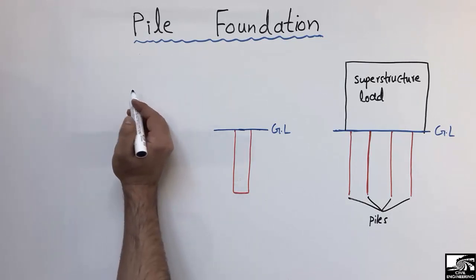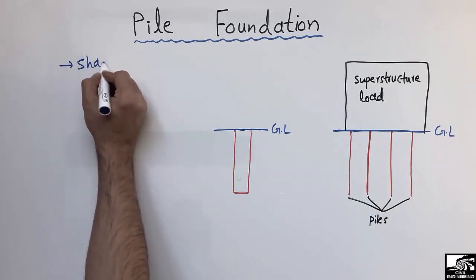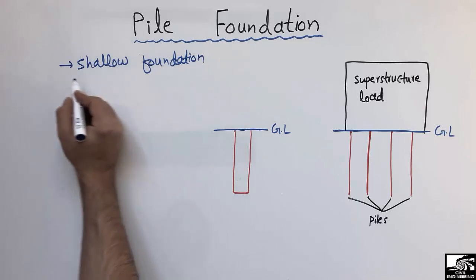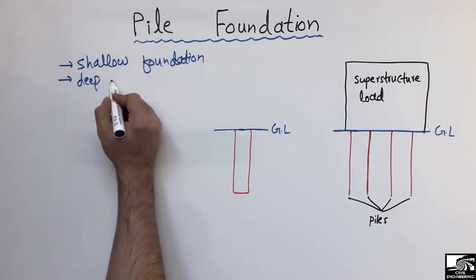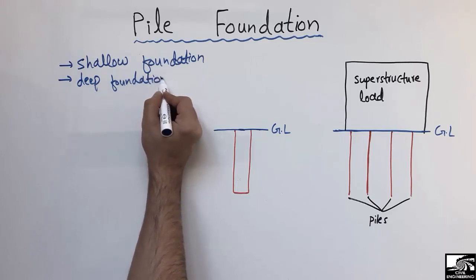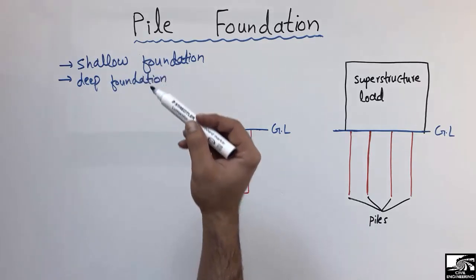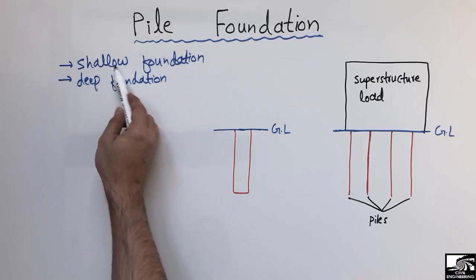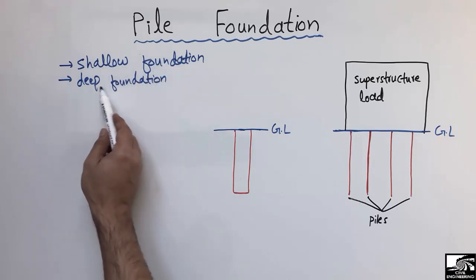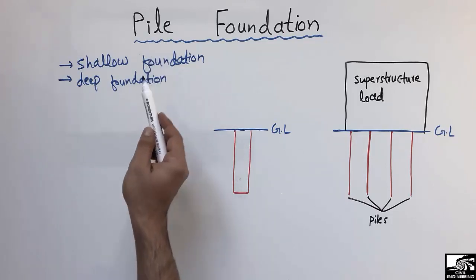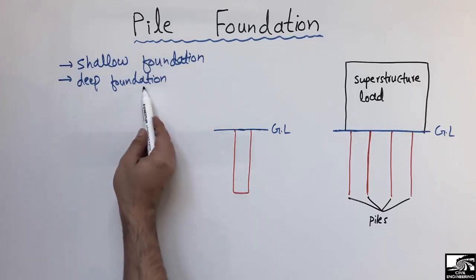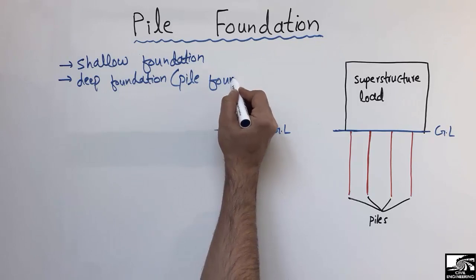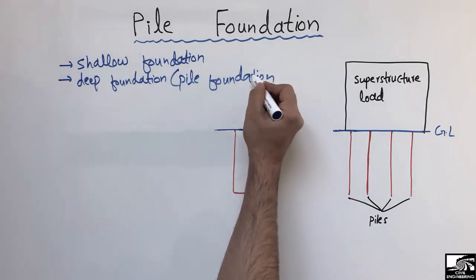Basically there are two main types of foundation. One is called the shallow foundation and the other one is the deep foundation. The difference between them is their depth ratio. The depth of the foundation is lower in the case of the shallow foundation, while the depth is much higher compared to shallow foundation, which is why we categorize it as deep foundation. Pile foundation comes under the category of deep foundation because its depth is much higher compared to its other dimensions.